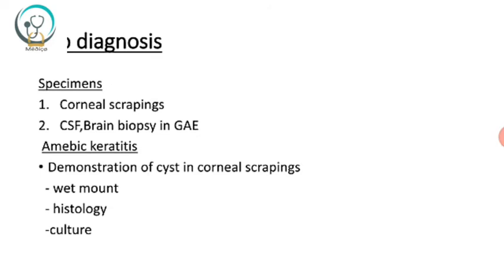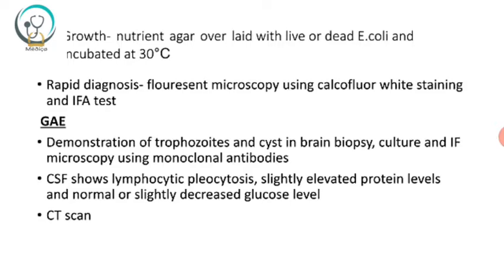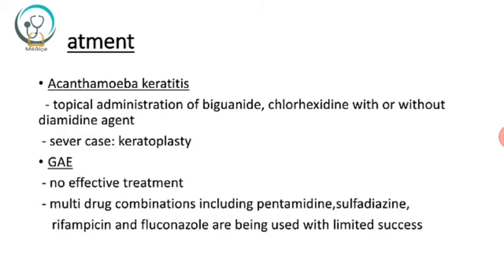For lab diagnosis, specimens include corneal scraping (for keratitis), CSF, and brain biopsy (for GAE). For amoebic keratitis, demonstration of cysts in corneal scrapings is performed by wet mount, histology, and culture on nutrient agar overlaid with live or dead E. coli incubated at 30 degrees Celsius. For rapid diagnosis, fluorescent microscopy using calcofluor white staining is performed. For GAE, demonstration of trophozoites and cysts in brain biopsy and culture using monoclonal antibodies are performed. CSF shows lymphocytic pleocytosis, slightly elevated protein, and normal or slightly decreased glucose. CT scan is also used.